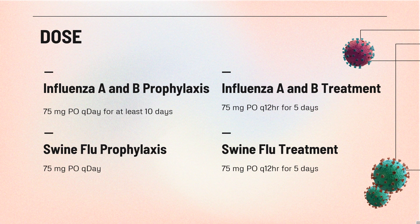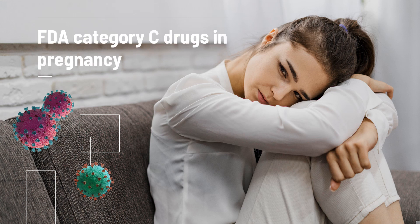For H1N1 influenza A (swine flu) prophylaxis, off-label: 75 mg orally once daily. For H1N1 influenza A (swine flu) treatment, off-label: 75 mg orally every 12 hours for 5 days. Safety advice: Oral oseltamivir, zanamivir, and peramivir are pregnancy category C medications, indicating that controlled clinical studies have not been conducted to assess the safety of these medications for pregnant people.